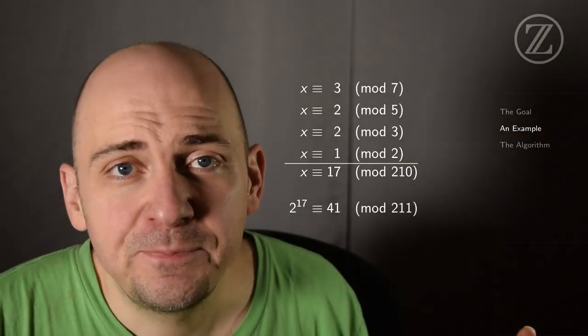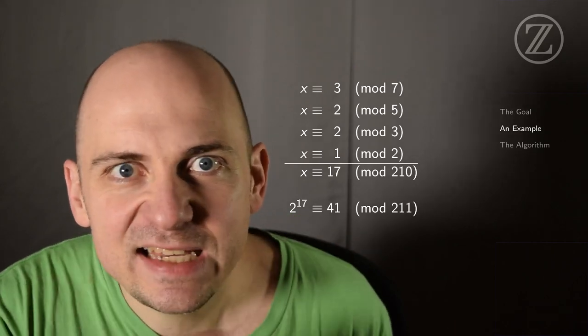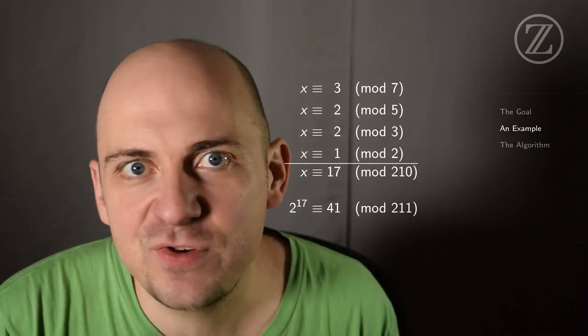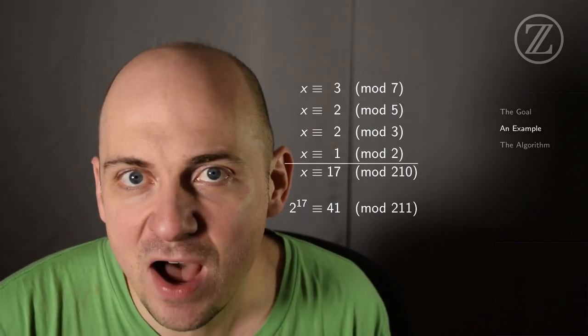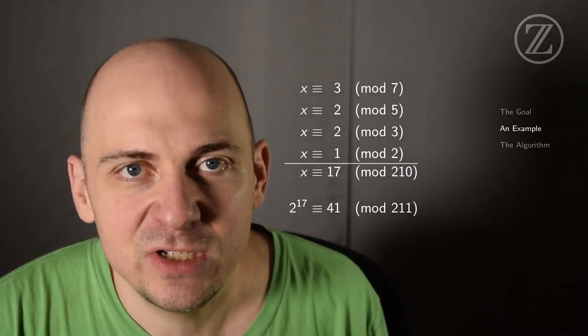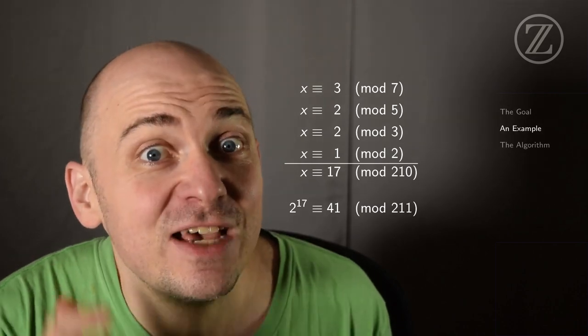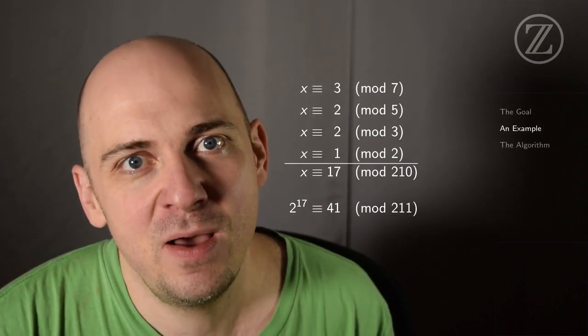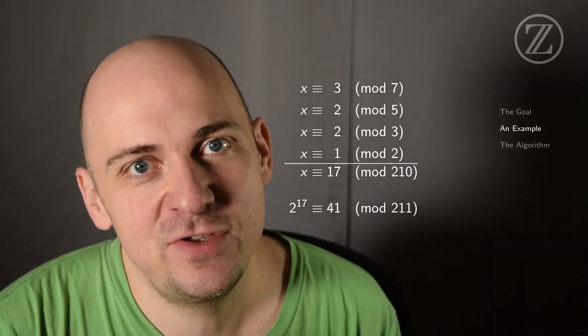So here's what we found out. Instead of trying a couple hundred possibilities for x, we investigated the value of x modulo 7, 5, 3, and 2. And we found out that x is 3 mod 7, 2 mod 5, 2 mod 3, and 1 mod 2. And then by gluing together all of those congruences, we're able to find a value of x that works. And we discovered that 2 to the 17th power is 41 modulo 211, thereby solving this specific instance of the discrete log problem.